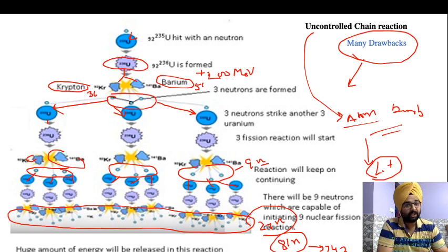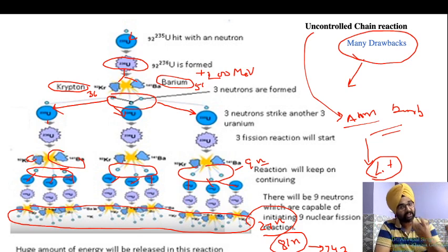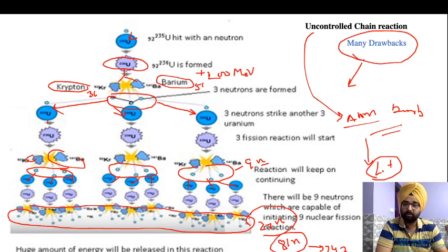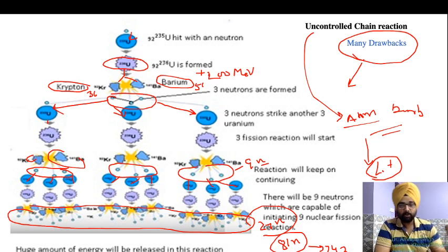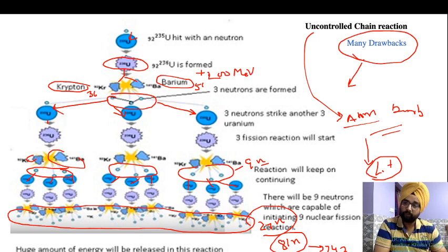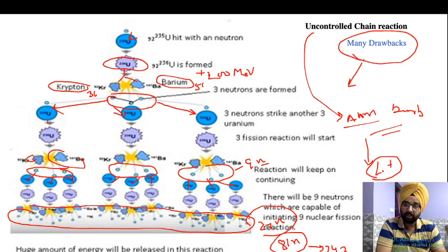Along with the enormous energy formed, we also have radioactive atoms and neutrons produced. These neutrons are very harmful to human beings. For example, in Japan, we saw the result of genetic disorders caused by this radiation.